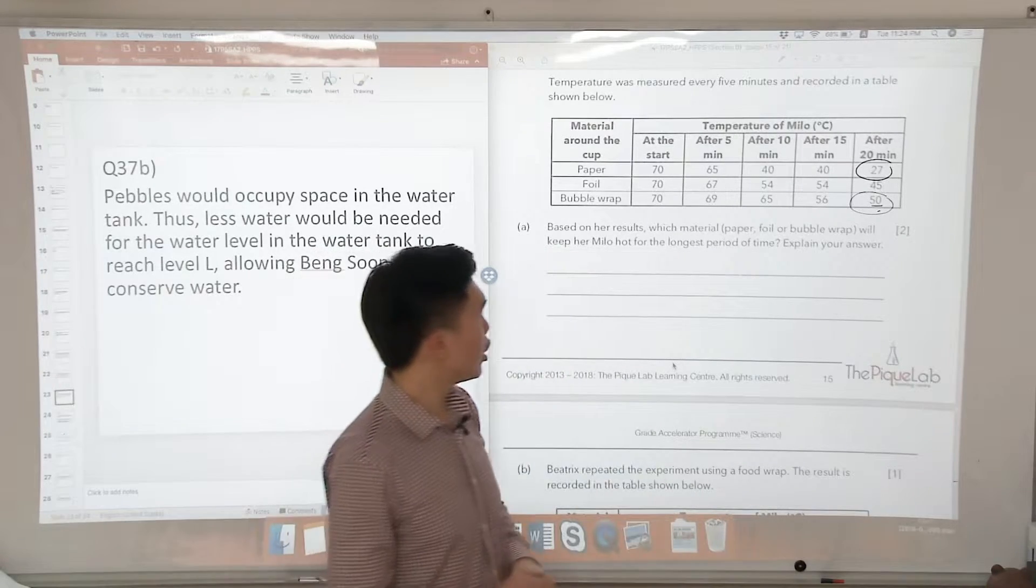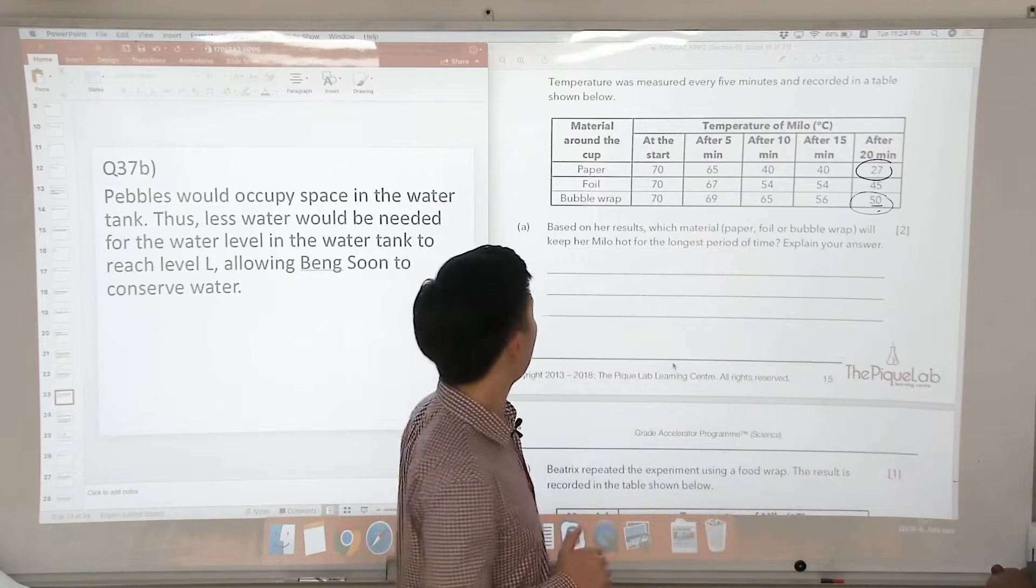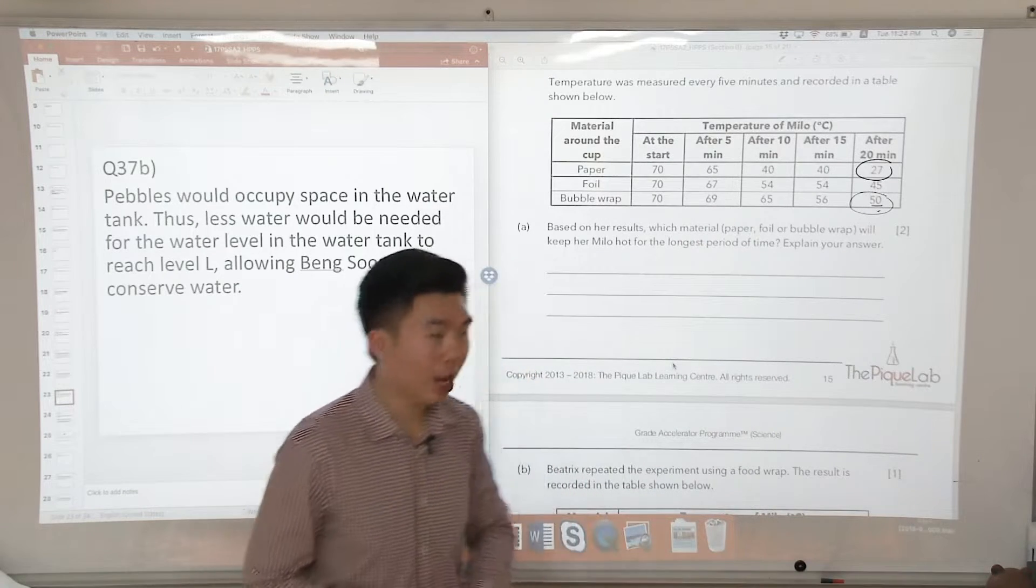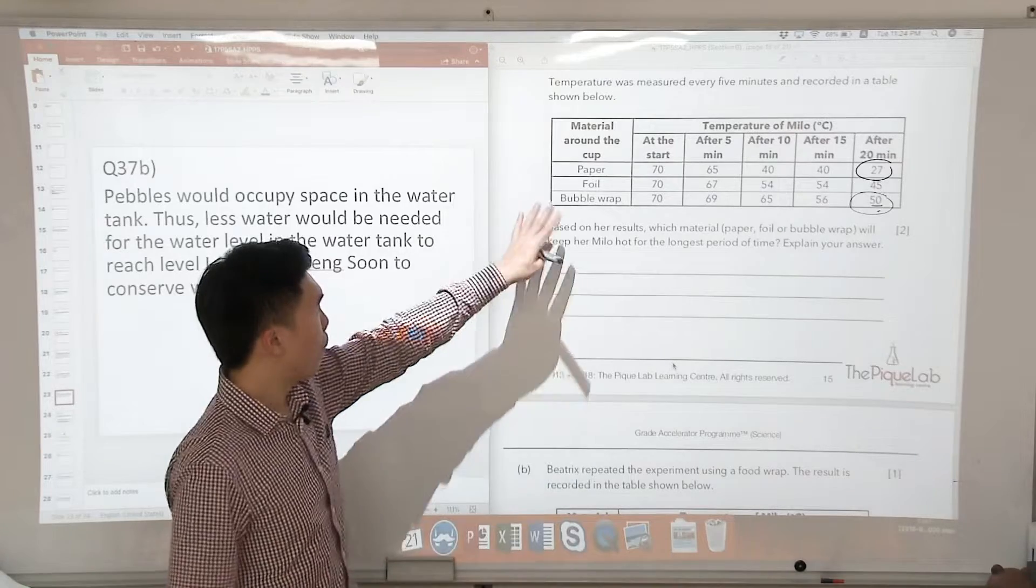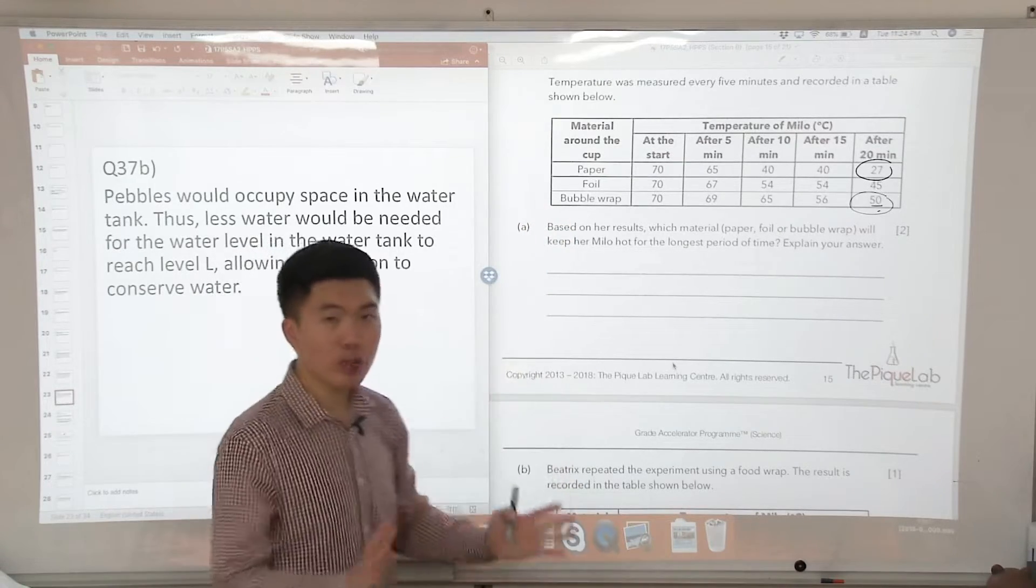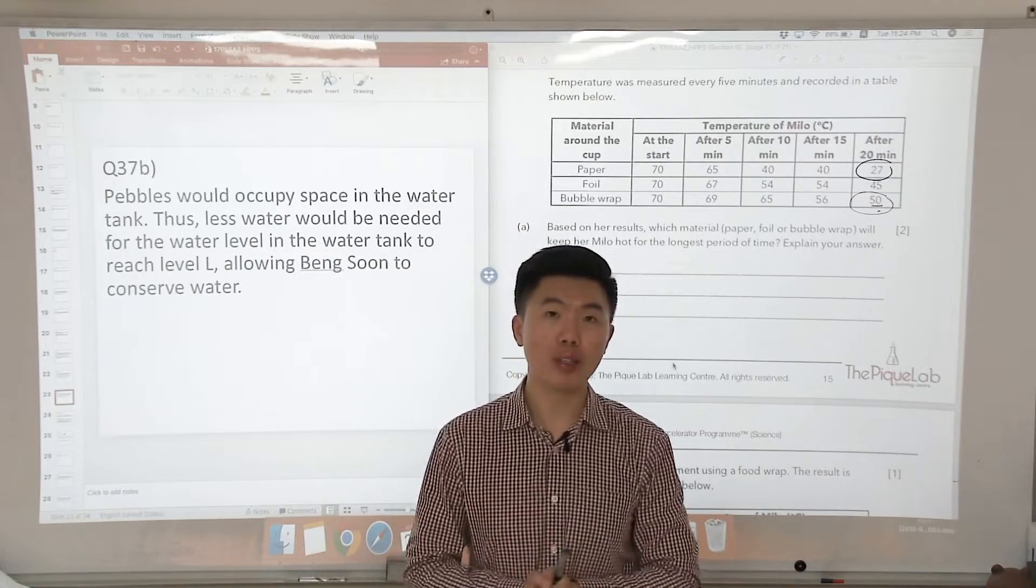So based on the results, which material—paper, foil, or bubble wrap—will keep her Milo hot for the longest period of time? I would choose the bubble wrap. So with any choosing question, we must remember to use our CUE.